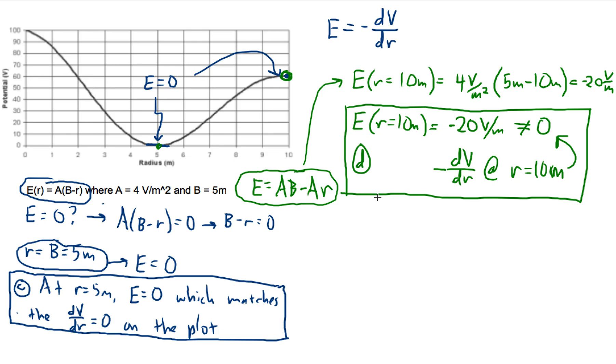You could also say, you could, if you wanted to, calculate some other point. Calculate a point far from here. So we know that at this point it models the electric field pretty well. And it stands to reason that this is sort of a simplified equation. It's probably going to model the electric field well near that point. And the further away you get, the less well it models the electric field. So maybe you could try saying, what's the electric field going to be at R equals zero? And that's going to equal four volts per square meter times five meters minus zero, which is going to be plus 20 volts per meter.